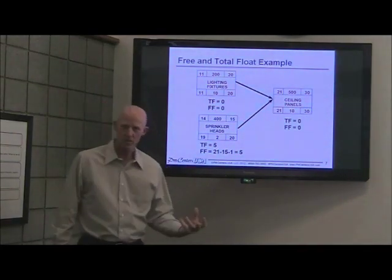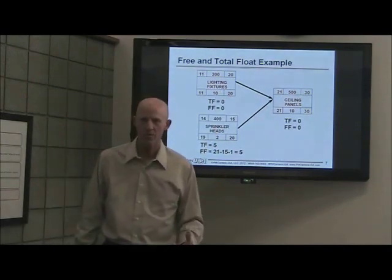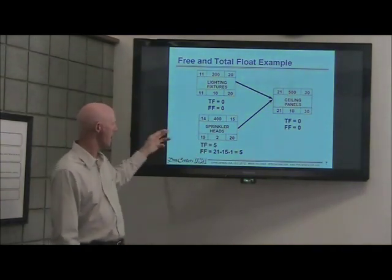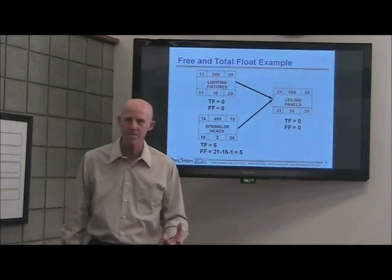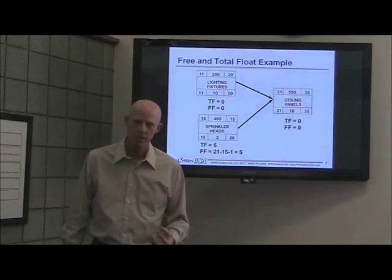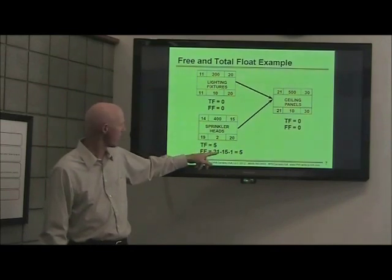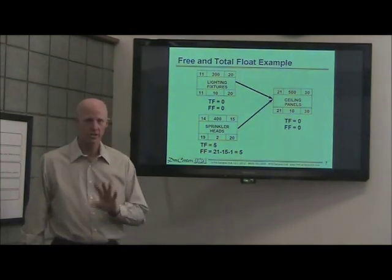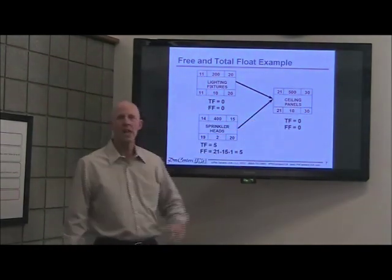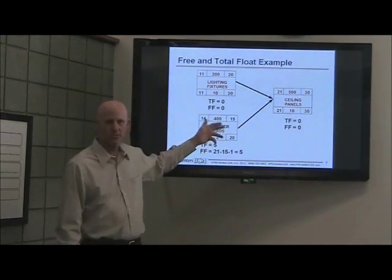What does this tell you? The path with zero float is the critical path. The sprinkler heads path has total float, so it has extra time and can be delayed up to five days without impacting the project completion date. In addition, that one task has five days of free float. Usually in a schedule, when you have two or more tasks converging into one, that's the place to find free float — it may not always happen, but it's a good place to look.